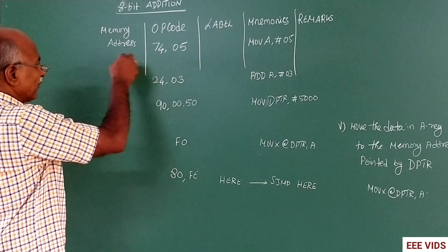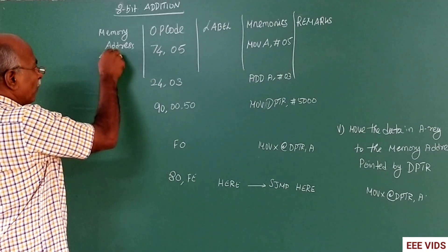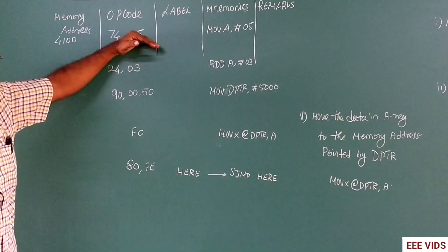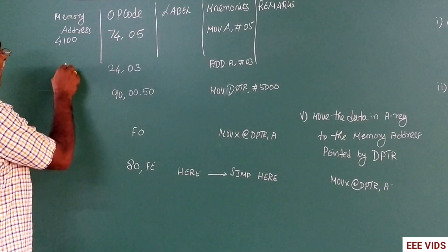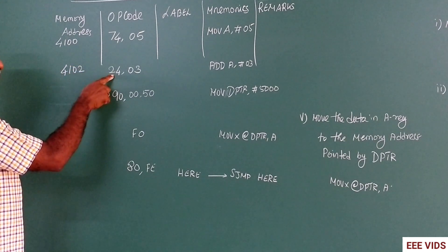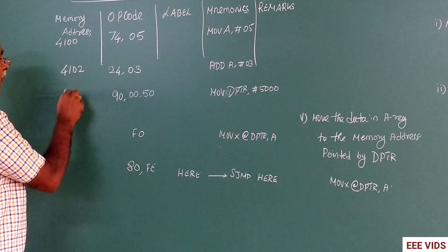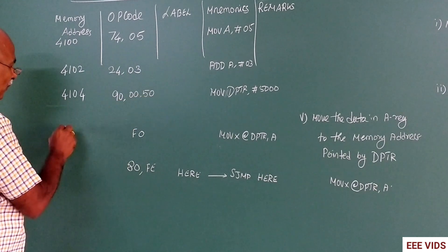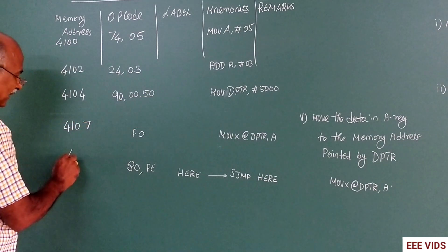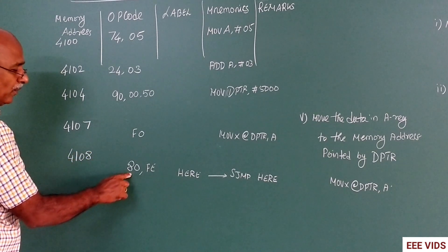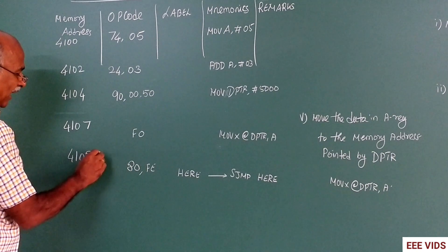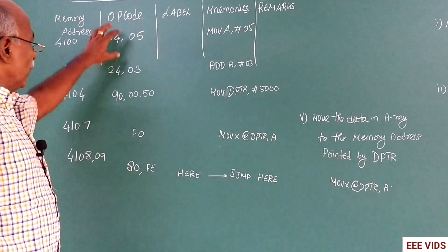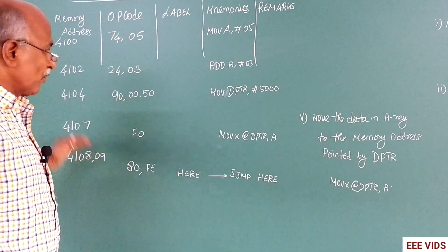The program must be copied to memory address. For example, use 4100. First 4100 has 74, 4101 has 05. Next mnemonics, 4102 has 24, 4103 has 03. 4104 has 90, 4105 has 00, 4106 has 50. 4107, then 4108 is F0, then 4109 is 80 and FE. When we execute, the program result is in the 5000 memory location. This is the addition program.